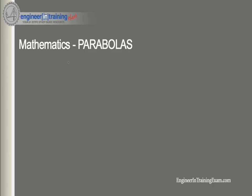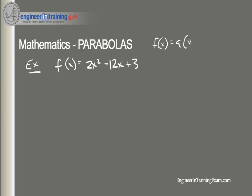We're given an equation in the unfriendly form and we want to convert it into the nicer of the two forms — the vertex form. We want it in this form so we can quickly define information about the parabola: the orientation, the vertex, and the intercepts. All we need to do is essentially complete the square.